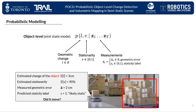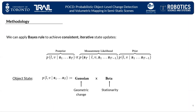The core of the system is the object-level joint state distribution. Imagine our robot comes across a pallet in the warehouse. The current distribution models the geometric change of the pallet to be 3 centimeters and its stationarity score to be 90%. The depth sensor then measures a geometric error of 2 centimeters with a predicted semantic label of likely static. Our system needs to decide if the pallet has moved or not. To answer this question, we apply Bayes' rule to consistently and iteratively update the object's state with new measurements and the previous estimate. We choose a Gaussian-beta distribution to parameterize the object's state model, as we expect the objects to stay around their original locations in the semi-static scene, and the static score is ultimately a probability from 0 to 1.